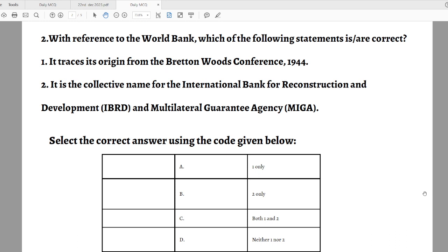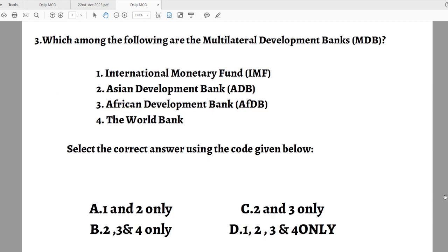Select the correct answer in the code given below. Options are: A. One only. B. Two only. C. Both. D. Neither. Question number three: Which among the following are the Multilateral Development Banks, MDB? First one is International Monetary Fund. Statement two, Asian Development Bank. Statement three, African Development Bank. Fourth one, World Bank.